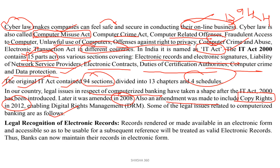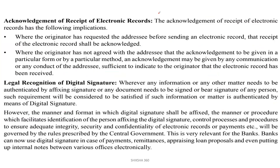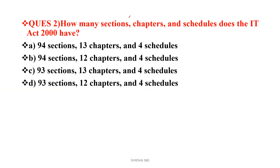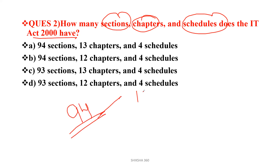All these things we have covered under this pattern. You have to remember how they will ask the question and how we have to eliminate the option. The elimination point here is the word 'physical' — all things are to be regarding electronics. Next question: how many sections, chapters and schedules does the IT Act 2000 have? The answer is 94 sections, 13 chapters, 4 schedules — option A.